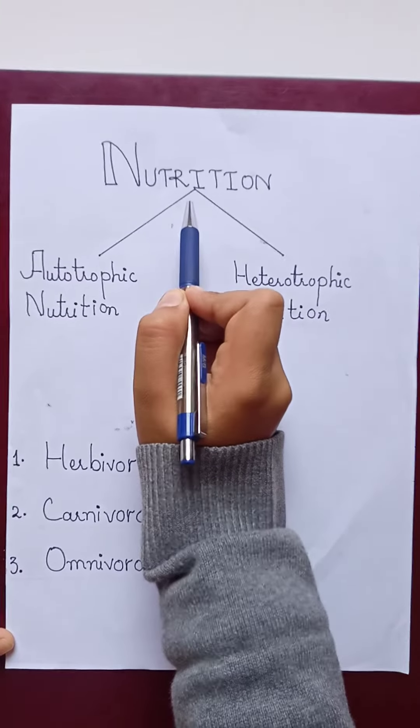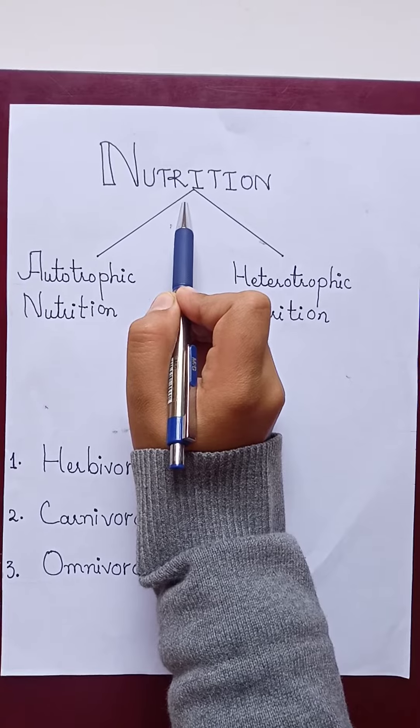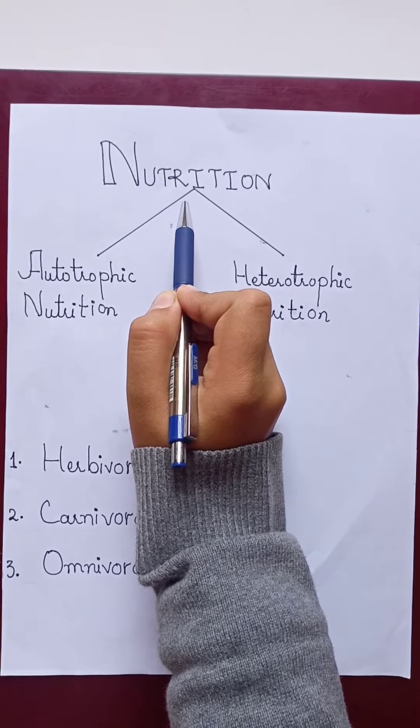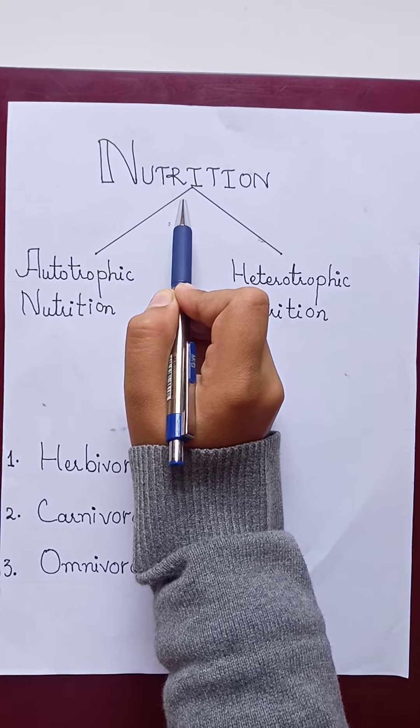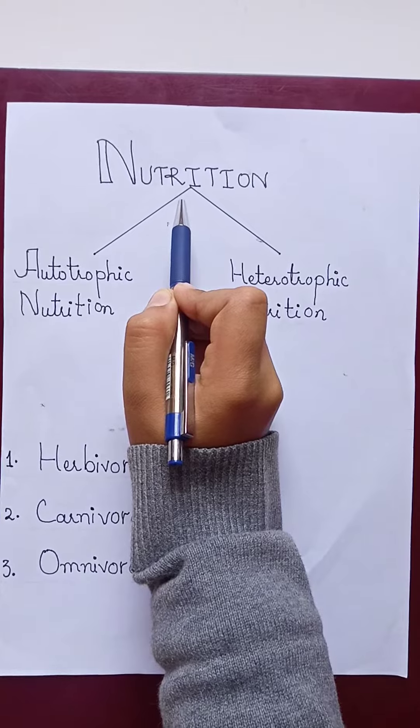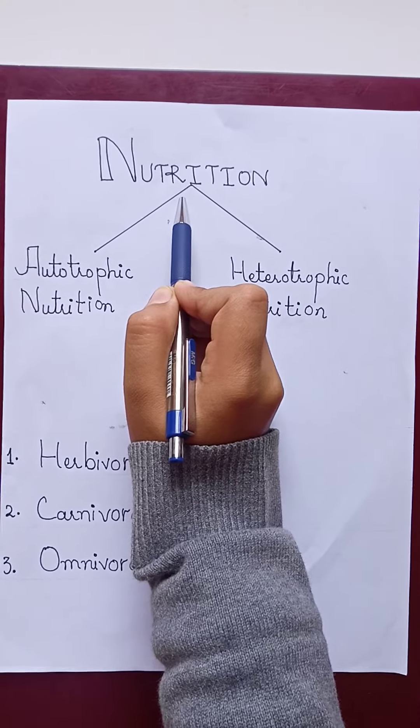All the processes involved in the utilization of food by an animal comprise nutrition. Nutrition includes procurement, digestion, absorption, and utilization of food in animals.